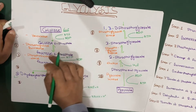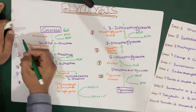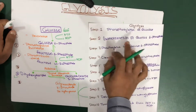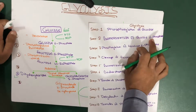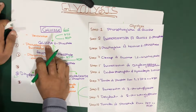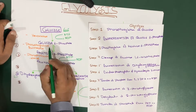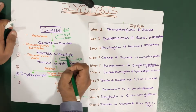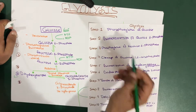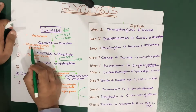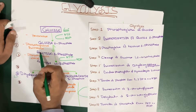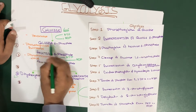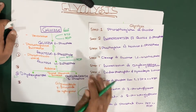Step two is the isomerization of glucose-6-phosphate. We make an isomer of glucose-6-phosphate. Since the isomer of glucose is fructose, glucose-6-phosphate is converted to fructose-6-phosphate. That is why we call it isomerization, and the enzyme used is phosphoglucose isomerase.